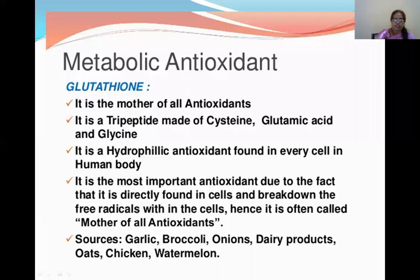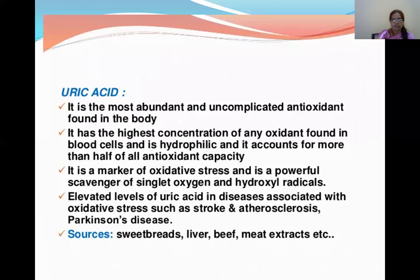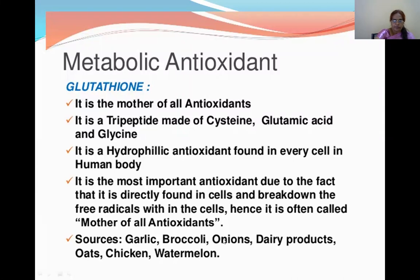Metabolic antioxidants include glutathione, uric acid, ceruloplasmin, transferrin, albumin, bilirubin, and haptoglobin. Glutathione is called the mother of all antioxidants because it is directly found in cells and breaks down free radicals within the cells. It is a tripeptide made up of three amino acids: cysteine, glutamic acid, and glycine.